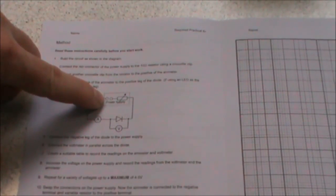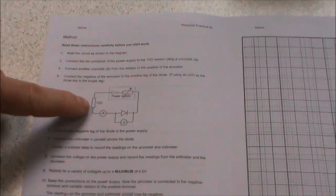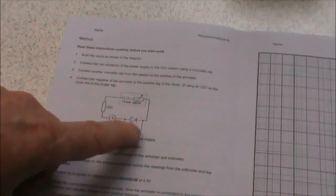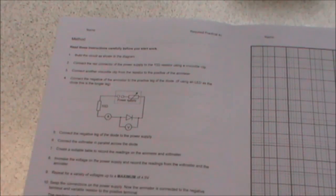If we look at the instructions we can see we have our circuit diagram here. We have our power supply which includes our rheostat for adjusting the voltage across the diode. We have a 10 ohm protective resistor, our ammeter, our diode and our voltmeter is in parallel across the diode.